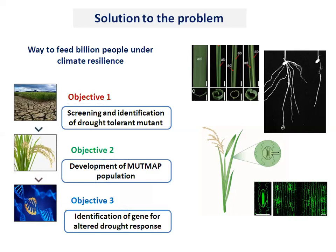Coming to the mechanism, the most important mechanism for drought is drought avoidance. There are three important characters pertaining to drought avoidance: one is longer root, another is partial closure of stomata, and the third is partial leaf rolling. These three are very important with respect to drought.